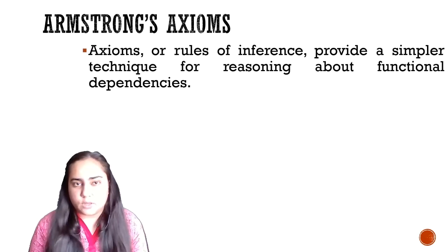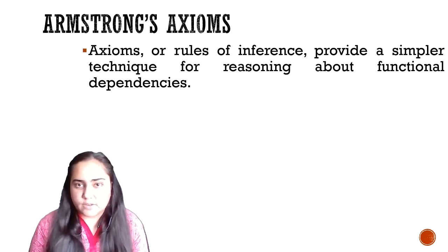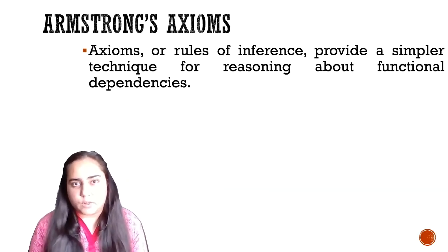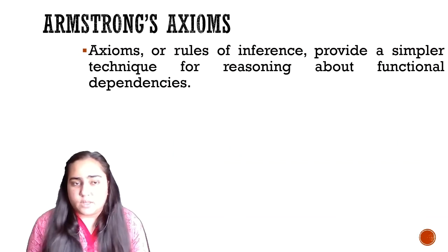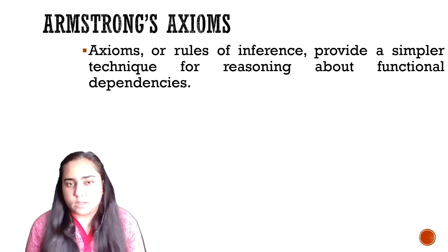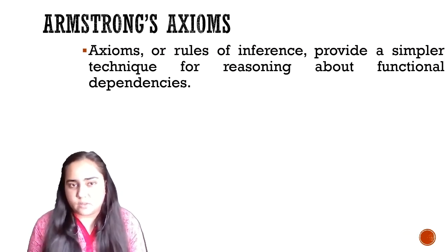Armstrong's axioms are rules of inference which provide a simpler technique for reasoning about functional dependencies. Functional dependencies are about how one column of a table depends on some other column — you can recognize the value of a column by using the value of some other column. These axioms are rules which allow you to find out one dependency from another dependency.